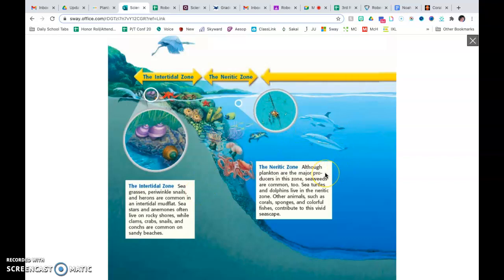The neretic zone. Although plankton are the major producers in this zone, seaweeds are common too. You have sea turtles and dolphins that live in the neretic zone, and other animals like coral, sponges, and colorful fishes. All of these creatures contribute to a vivid seascape. You can see this tiny plankton and they've blown it up here.